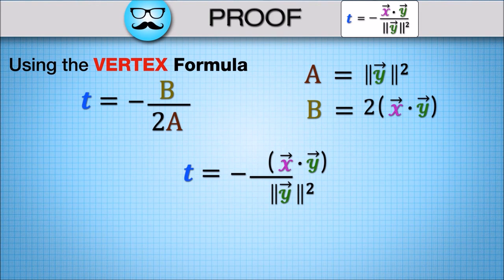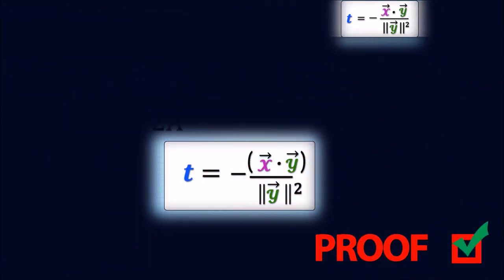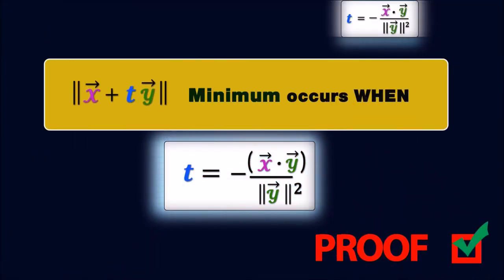The minimum occurs when t equals minus x dot y divided by norm of y squared. Now we use this result to derive one of the most important inequalities in mathematics.